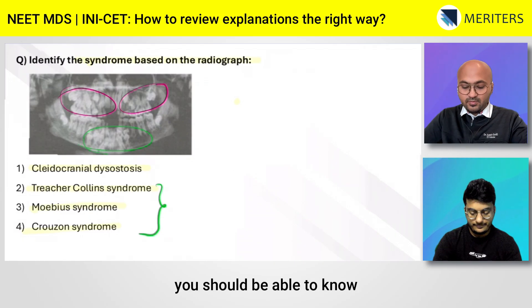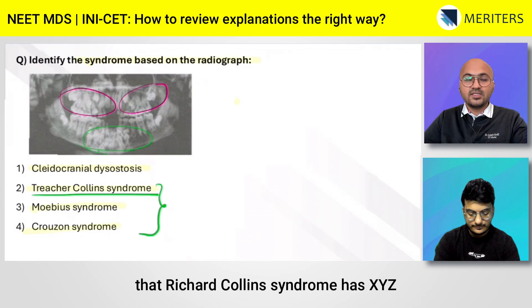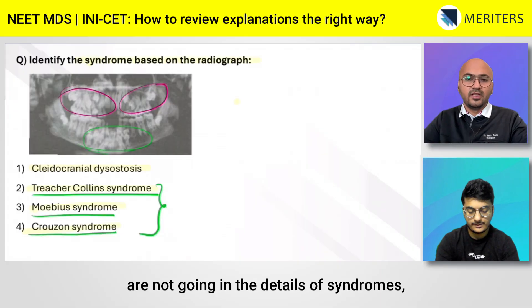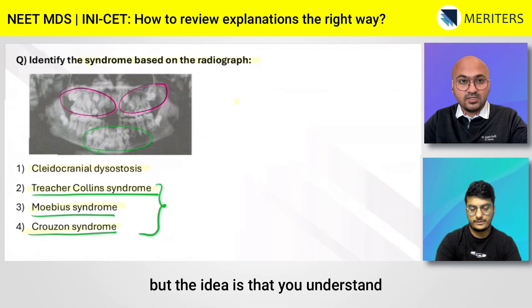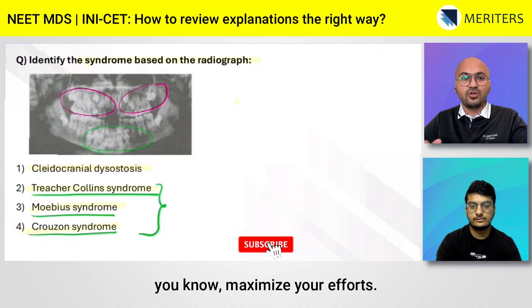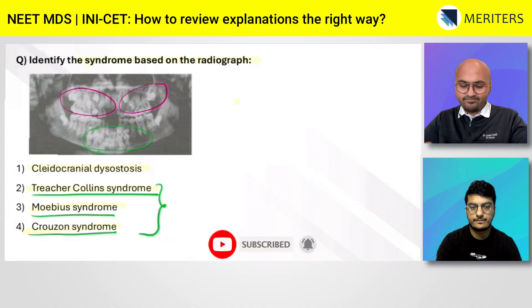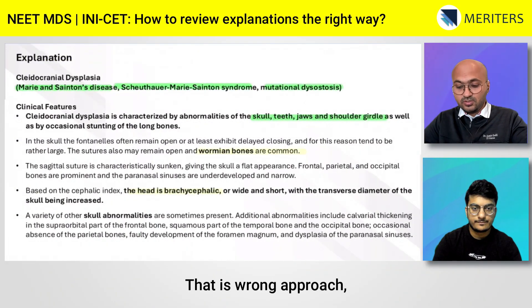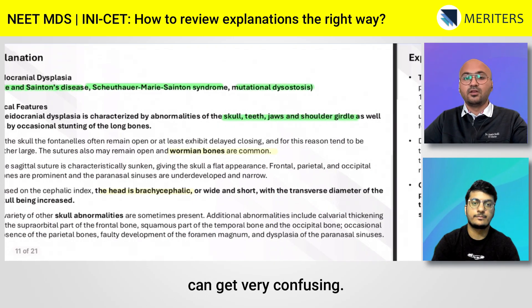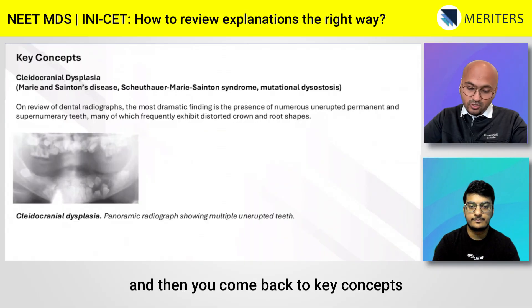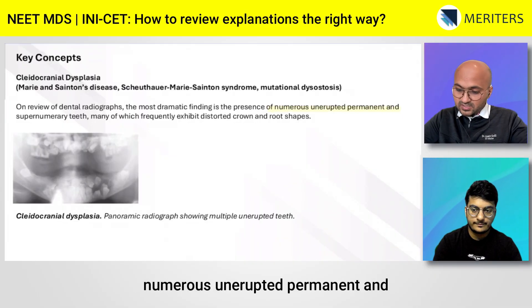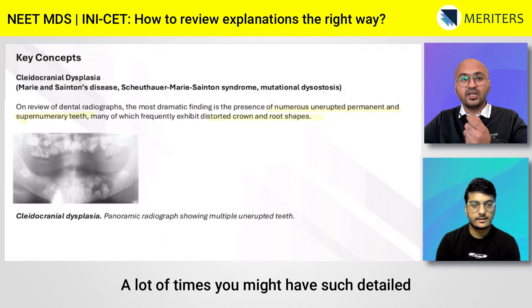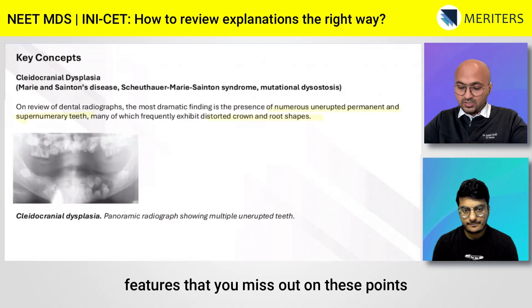You should also be able to correlate the incorrect options — know that Treacher Collins has certain features, Möbius has different features, and Crouzon syndrome has its own features. The idea is to maximize your efforts. Don't just think 'mixed dentition plus supernumerary equals cleidocranial' — that is the wrong approach. Especially with synonyms it can get very confusing, so read thoroughly and then come back to the key concepts.